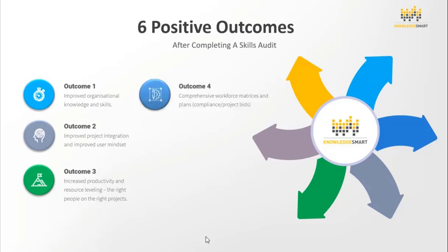Outcome four: a comprehensive workforce matrix or plan, which helps us with compliance and project bids. Outcome five: a targeted training plan and reduced training spend. It is now more critical than ever to keep our teams engaged in project work and staying as productive as possible. Many teams are working remotely, and we need to think about how to train them differently. The more targeted we can be about training in terms of skill gaps and alignment to current business goals, the better results we can expect.